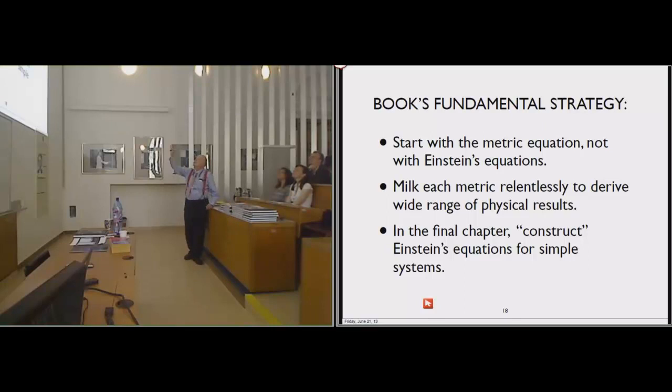We're going to choose the energy of the stone at rest. Once you do this, the rest mass of the stone is m. There's usually a c squared there, but if we use this method, we get rid of it. Finally, the black hole has mass in units of meters. That's the gravitational constant times m in kilograms divided by c squared. That simplifies all our equations. The book's fundamental strategy is you start with the metric equation, not with Einstein's equation. Because the metric equation has only differentials in it. There is no tensors. You use the metric equation and you milk each metric relentlessly to derive the widest possible range of physical results. That's what's unique about our general relativity book. You need only the metric, which you're given.